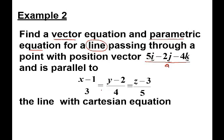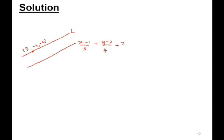So here, we want to find a line equation L. Well, the point, the position vector is point (5, -2, -4) and it is parallel to the line (X - 1)/3 = (Y - 2)/4 = (Z - 3)/5.